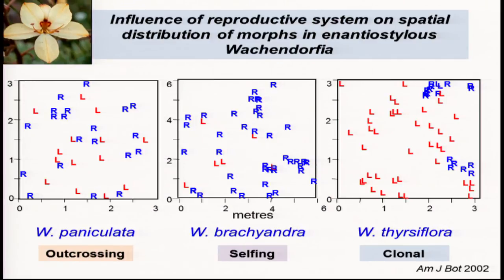When we map these out, we can see a pattern consistent with these three different kinds of reproductive systems — a random distribution of morphs in paniculata, but clustering in the two species with uniparental reproduction: selfing versus cloning.